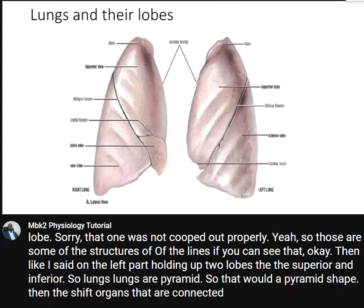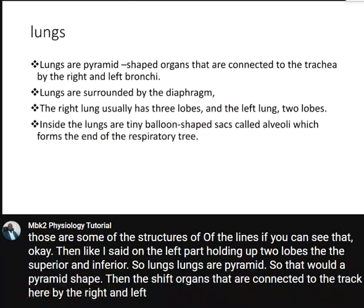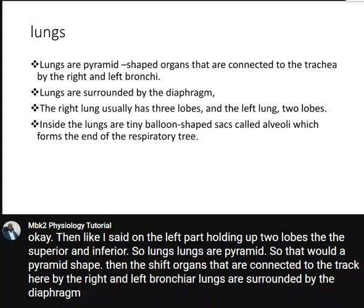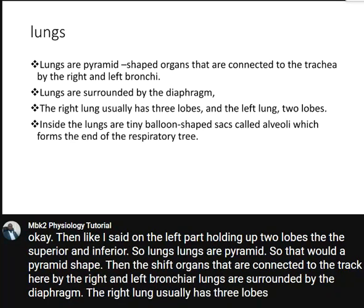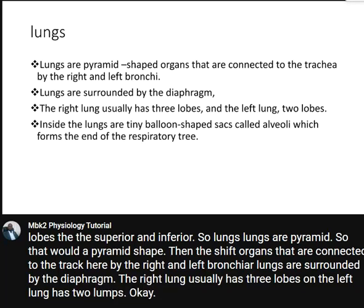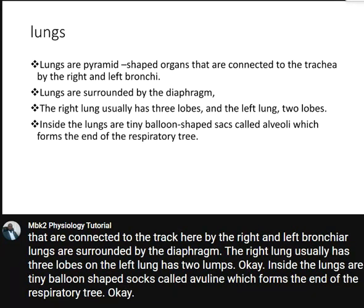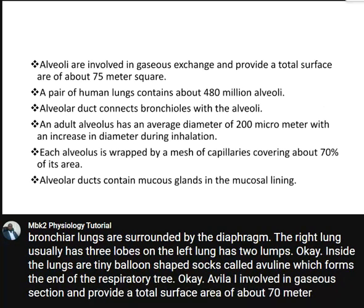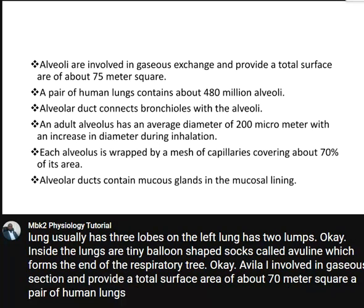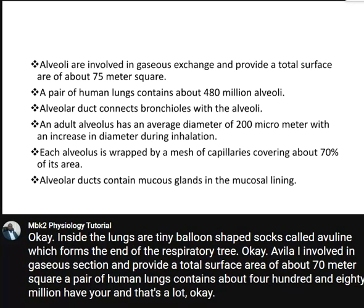The lungs are pyramidal-shaped organs connected to the trachea by the right and left bronchi. The lungs are surrounded by the diaphragm. The right lung usually has three lobes and the left lung has two lobes. Inside the lungs are tiny balloon-shaped sacs called alveoli, which form the end of the respiratory tree. Alveoli are involved in gaseous exchange and provide a total surface area of about 70 square metres. A pair of human lungs contains about 480 million alveoli.